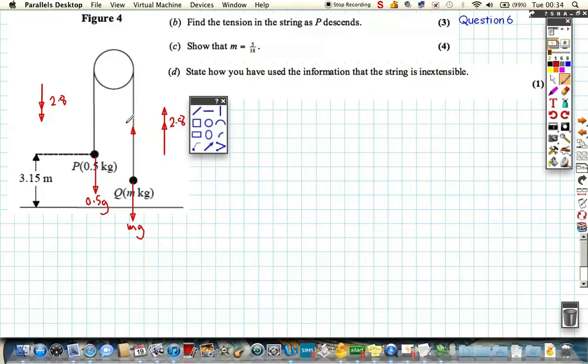Then we're going to have tension of string. If I was particle Q, I would experience the tension of T pulling me upwards. If I was particle P, I would also experience the tension of the string. In this case, it's not enough to cause me to move upwards, but there's going to be a force acting upwards.